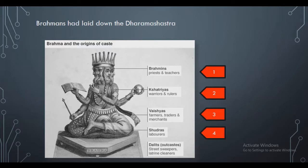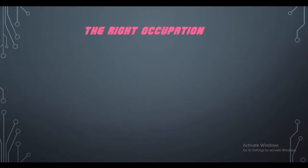There is also the Dalit group, who were not even treated as part of the caste system because it was claimed they did not originate from the god Brahma. That is why they were made outcasts — they are what we call the untouchables. Now we are going to discuss the different occupations of the different castes.